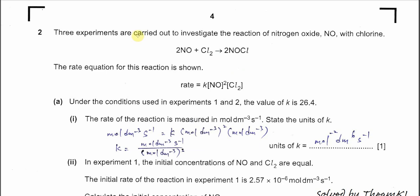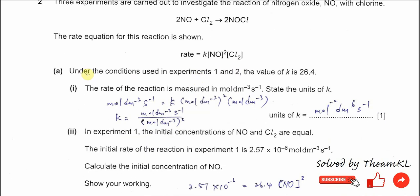Question 2. Three experiments are carried out to investigate the reactions of nitrogen oxide NO with chlorine. NO reacts with chlorine to form NOCl. The rate equation shows that NO is second order and chlorine is first order. Under the conditions used in experiments 1 and 2, the value of k is 26.4.